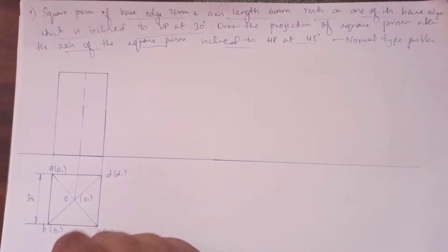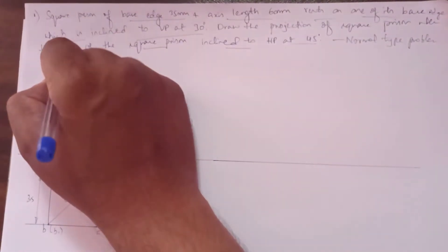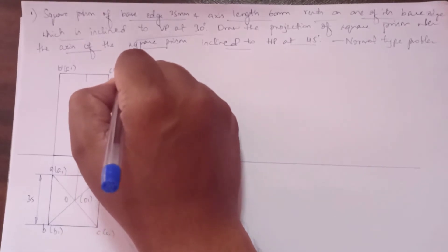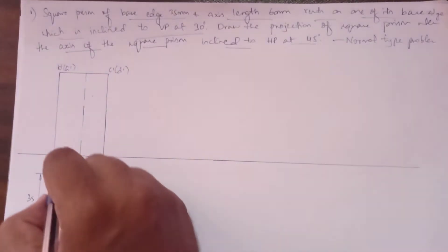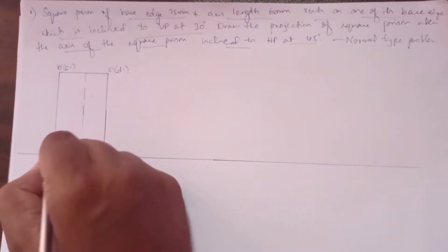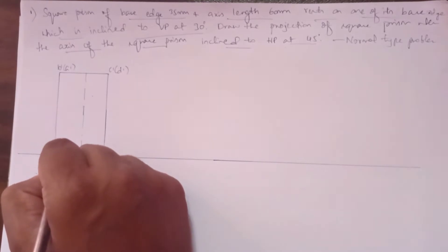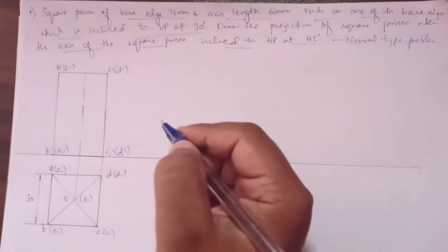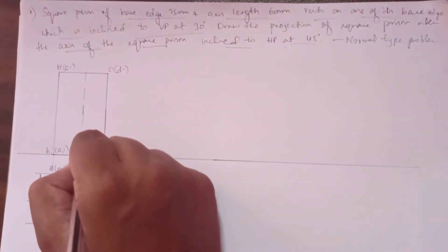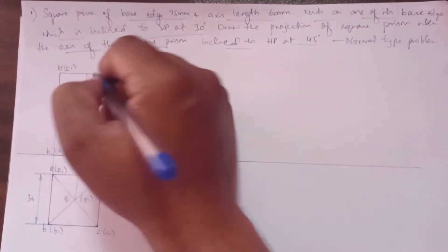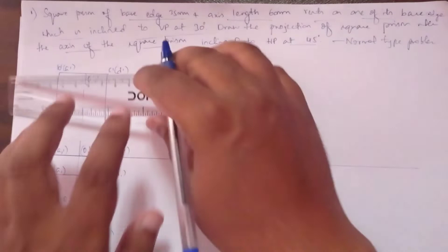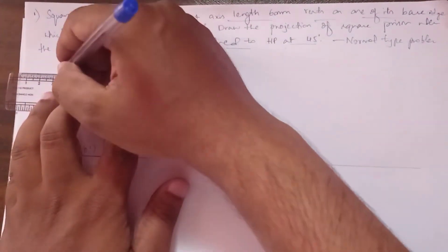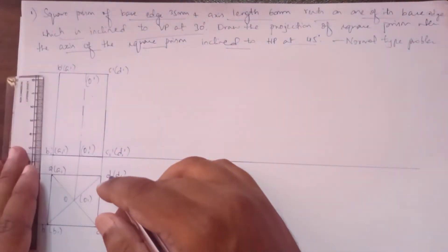In the front view, you can see the notations: b-dash and c-dash are visible, b1-dash is visible, a1-dash is not visible, c1-dash is visible, d1-dash is not visible. Similarly, a-dash is not visible. The axis length is 60mm.